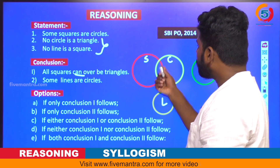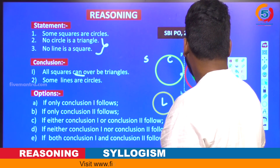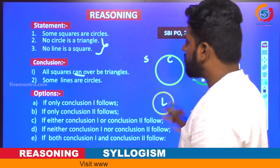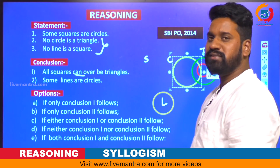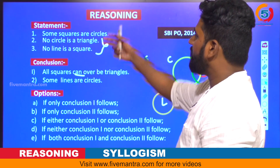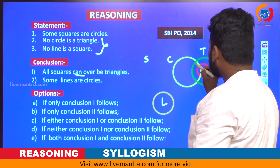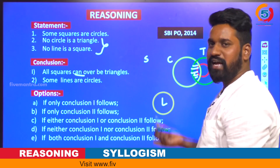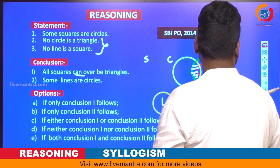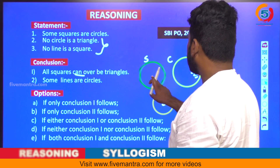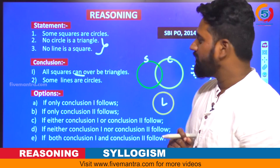It is clearly mentioned that no circle is a triangle. In the diagram, there must be an intersection between circle and square. If you take the conclusion 'all squares can be triangles' as correct, you would need an intersection between circle and square, but that would also create an intersection with triangle, giving a wrong answer because no circle is a triangle. So this condition is not possible. The correct diagram has square, circle, triangle, and line separately.